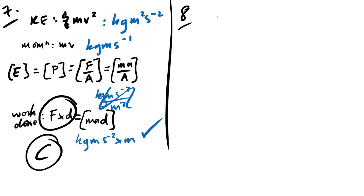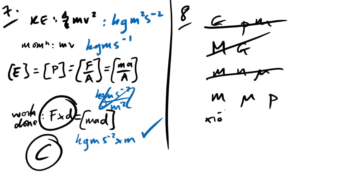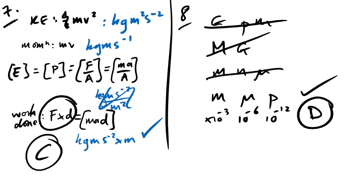Question 8: which is in descending order of magnitude? Descending means going down. Checking: giga > mega (wrong), pico < nano (wrong), milli (10⁻³) > micro (10⁻⁶) > pico (10⁻¹²) — that is descending. The answer is D: milli, micro, pico.